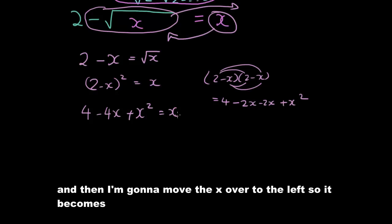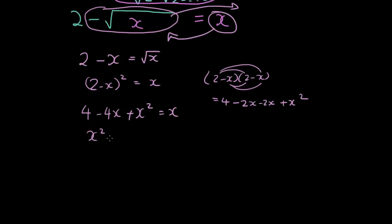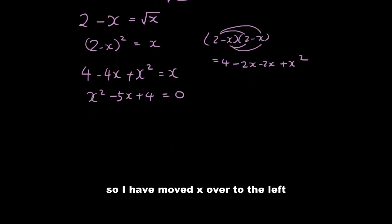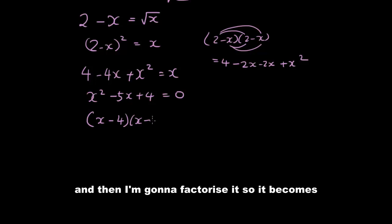I'm going to move the x over to the left. So it becomes x squared minus 4x minus x, minus 5x plus 4 equals 0. I've moved the x over to the left. And then I'm going to factorize it, which becomes (x minus 4)(x minus 1) equals 0.